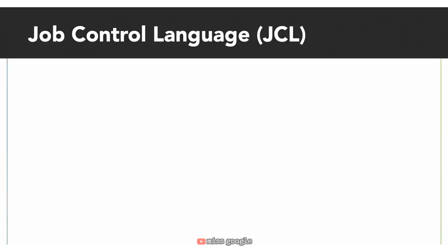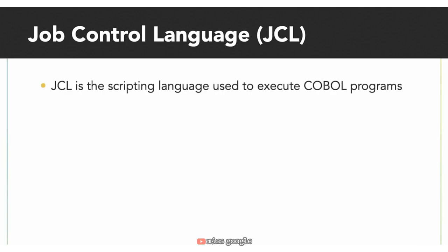In COBOL, it's important to understand how programs are run. Programs are run using JCL, a job control language. JCL is the name for the scripting language used on IBM Mainframe's operating systems to instruct the systems on how to run a batch job or how to start an online subsystem. More specifically, the purpose of JCL is to say which programs to run, using which files or devices for input and output, and at times indicate whether there are additional conditions that might require you to skip a step.